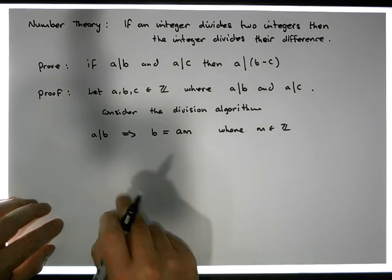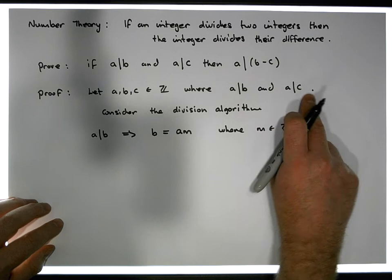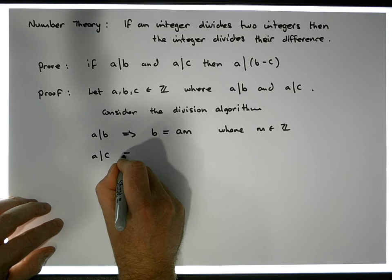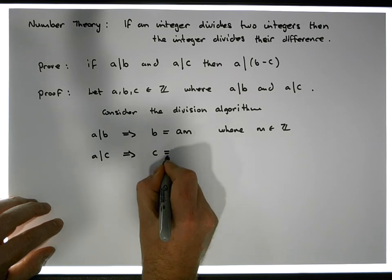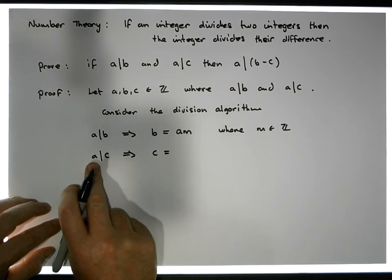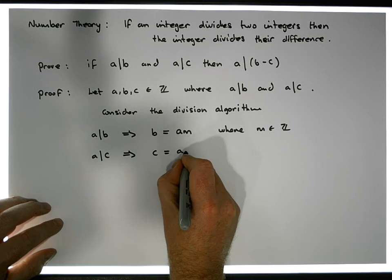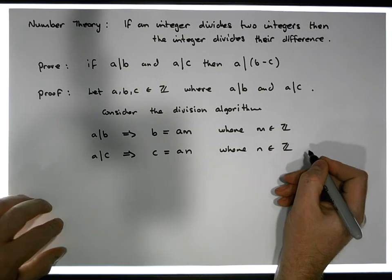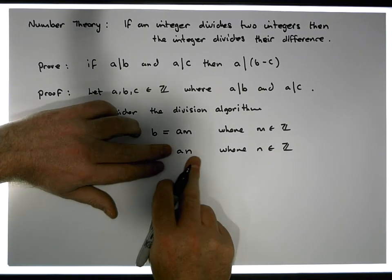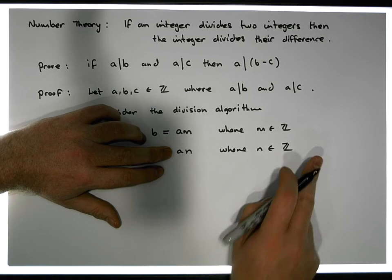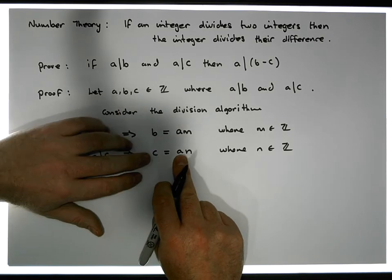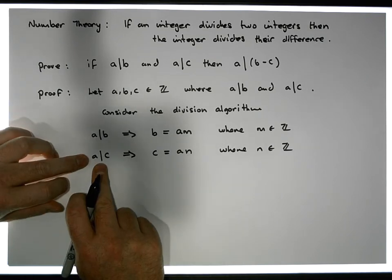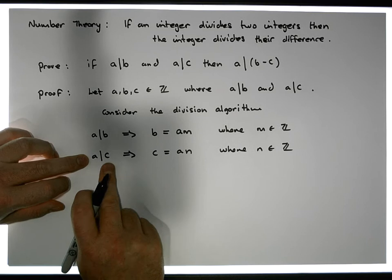And what about our second relation here — that A divides C? Well what does that imply? Well that implies that C should be able to be written as the product of two numbers where one of the numbers is A. So C should be able to be written as A times N, where N is an element of the integers. The right hand side is an integer times an integer, so that's an integer, and it's divisible by A. And if we let C be this number, well then C has the appropriate property in relation to A dividing C.